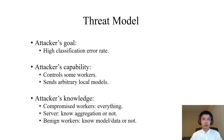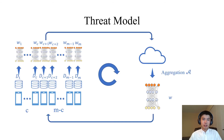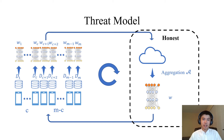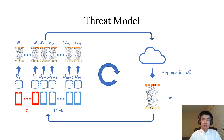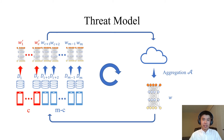Here is our threat model. The attacker's goal is to increase the classification error rates of the global model. We assume the attacker controls some compromised workers, which can either be good workers that have been co-opted by the attacker or fake workers injected by the attacker. The attacker can send arbitrary local models to the server from those compromised workers. We also assume that the attacker knows everything about the compromised workers. The master is honest and the communication channel is safe, but workers might be compromised and can arbitrarily modify their local models before sending them to the master.